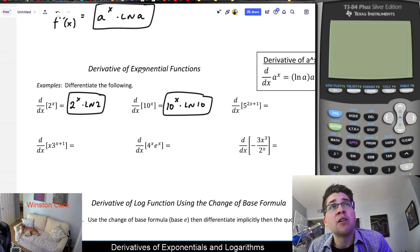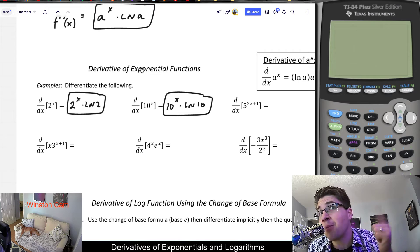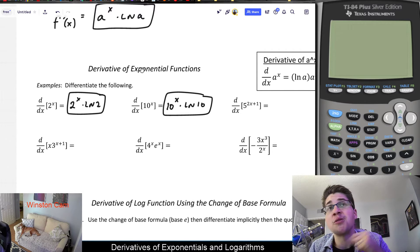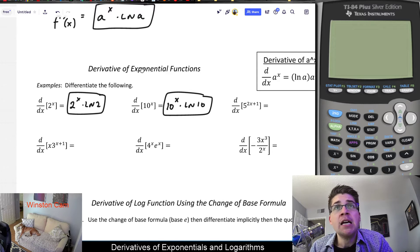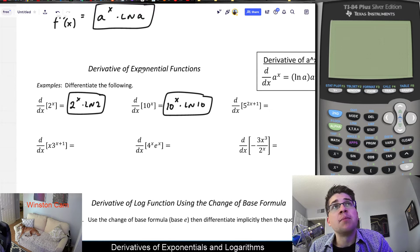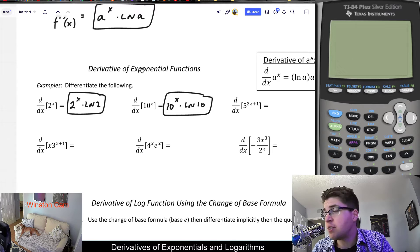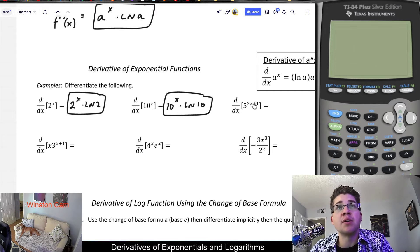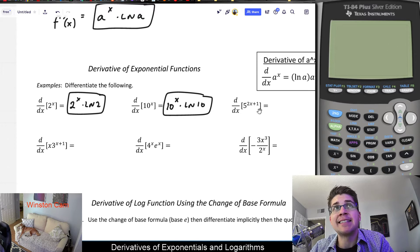Now, in the next few examples, they're a little bit more complicated because we may have to use a chain rule, product rule, quotient rule, all those other rules for derivatives if it's a little bit more complicated. So say we had, for example, 5 to the 2x plus 1. You can technically rewrite this using properties of exponents and things and solve it that way.